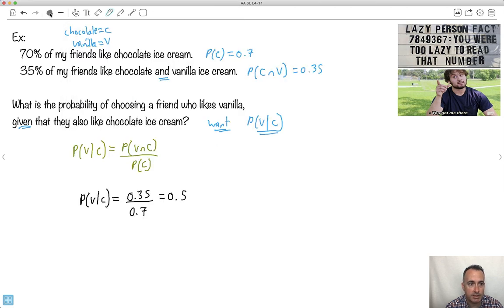So there we go. It's 50% likely. So what that tells you is if you're told that someone already likes chocolate, the probability of them liking vanilla is actually 50%. There you go. So that's how we can do these.